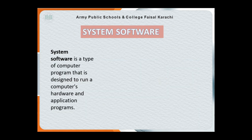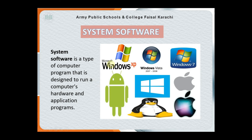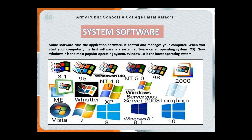System software is a type of computer program that is designed to run our computers, hardware, and application programs. As you can see in the picture, we have multiple system software like Windows XP, Windows Vista, Windows 7, Windows 8, Android, Linux, and Apple. System software can manage our hardware and all the operations of a computer. Some software runs the application software and controls and manages your computer.